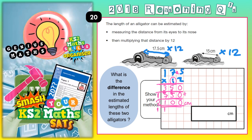But wait — that 2,100 is when we did 175 times 12. It was not 175 times 12, it was 17.5 times 12. So we need to put our decimal point back in, one digit in from the end. So it's actually not 2,100 — it's actually 210 centimetres. So the bigger crocodile is 210 centimetres.